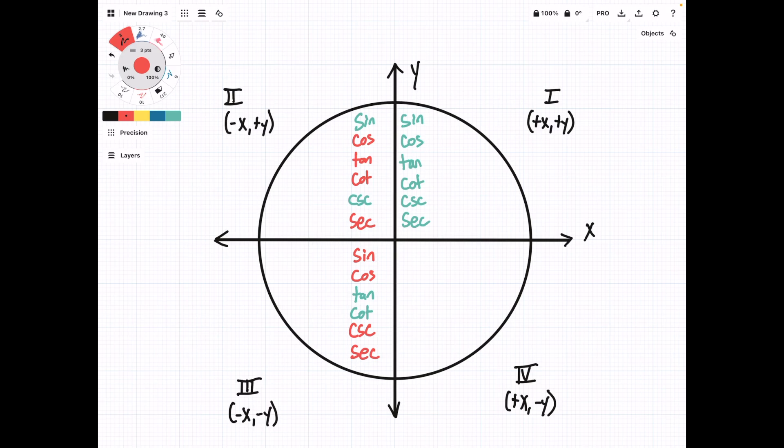And then in quadrant 4, we have a negative sine, positive cosine, negative tangent, negative cotangent, negative cosecant, and a positive secant.